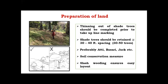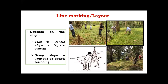Once shade thinning is done, we should go for slash clearing, which ensures easy layout and line marking of the coffee plantation. Line marking is an important aspect — if a person makes a mistake during line marking, it will be carried forward to the established plantations, causing huge losses. Line marking, in simple terms, is the arrangement of seedlings in a systematic manner in the given area or plantation. It depends upon the type of land or topography.